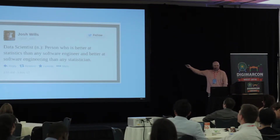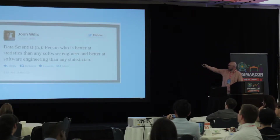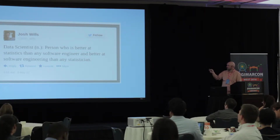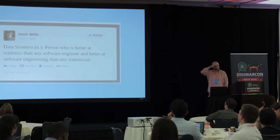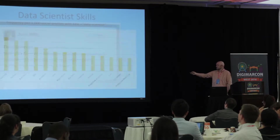Here's another quote used in a lot of these presentations about data science. Josh Willis basically said a data scientist is a person who's better at statistics than a software engineer and better at software engineering than a statistician. So it's a combination of statistician and software engineering — someone who can use the data and understand it statistically.